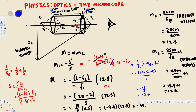So the actual M1 is negative 2.6, which is slightly less than the earlier approximation of negative 3.6. Using negative 2.6 gives the correct magnification. That's how we solve this type of microscope magnification problem. I hope this helps — thanks for watching.